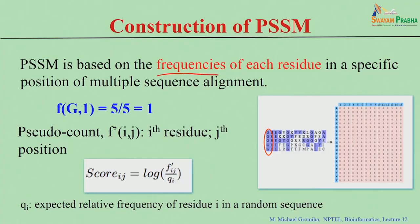How to construct the PSSM matrix? The basis for the PSSM is sequence alignment, which gives the frequencies of each residue at each position in a multiple sequence alignment. For example, consider sequences GHE, GV, GK, VV, KL, GA, GA — five sequences used in a multiple sequence alignment. Based on the first sequence, residues that are the same or conserved are highlighted.